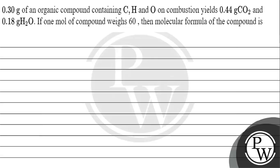The question says 0.30 gram of an organic compound contains carbon, hydrogen and oxygen. On combustion it gives 0.44 gram of carbon dioxide and 0.18 gram of water. If the molecular mass is 60, then the molecular formula of the compound is?